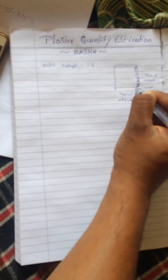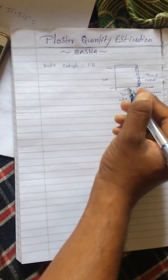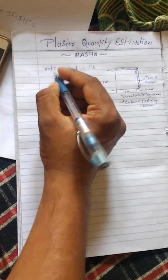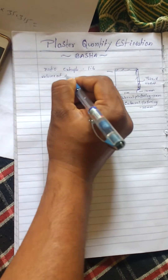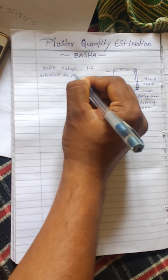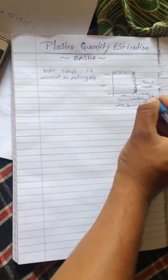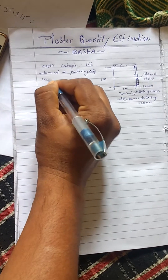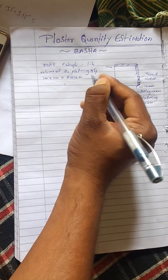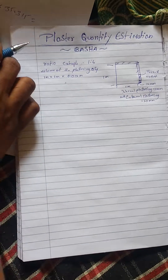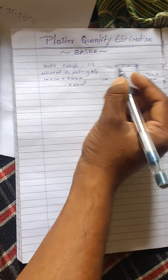This length is 1 meter, and this length is also 1 meter. Estimate the area and volume of the plaster quantity. This one is mm converted to meters: 1 meter into 1 meter into 0.012 meter. The area volume is equal to 0.012 cubic meters.